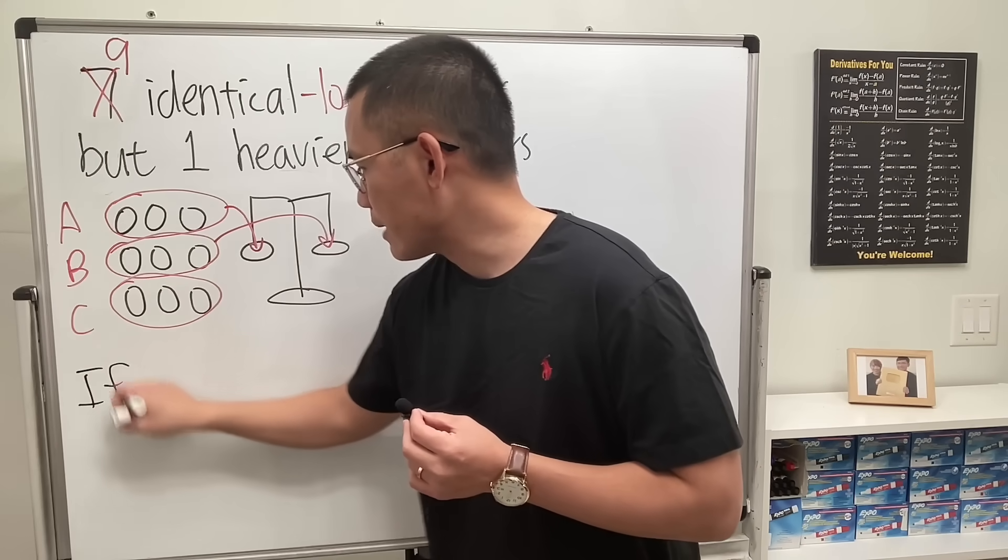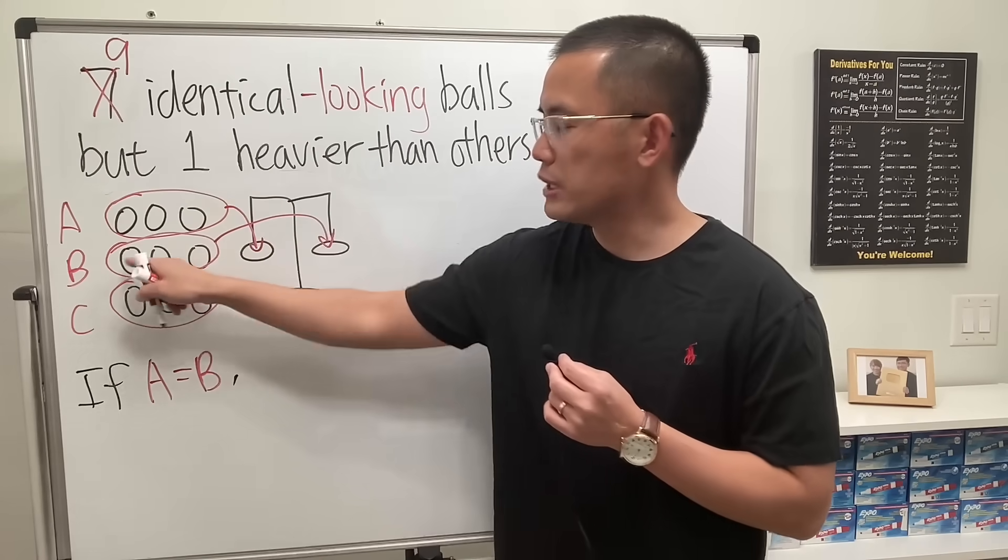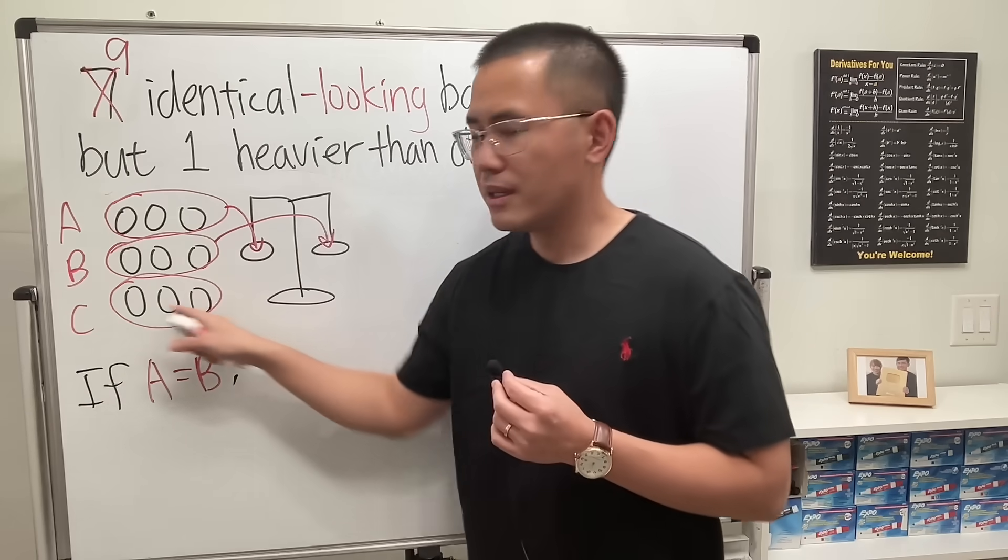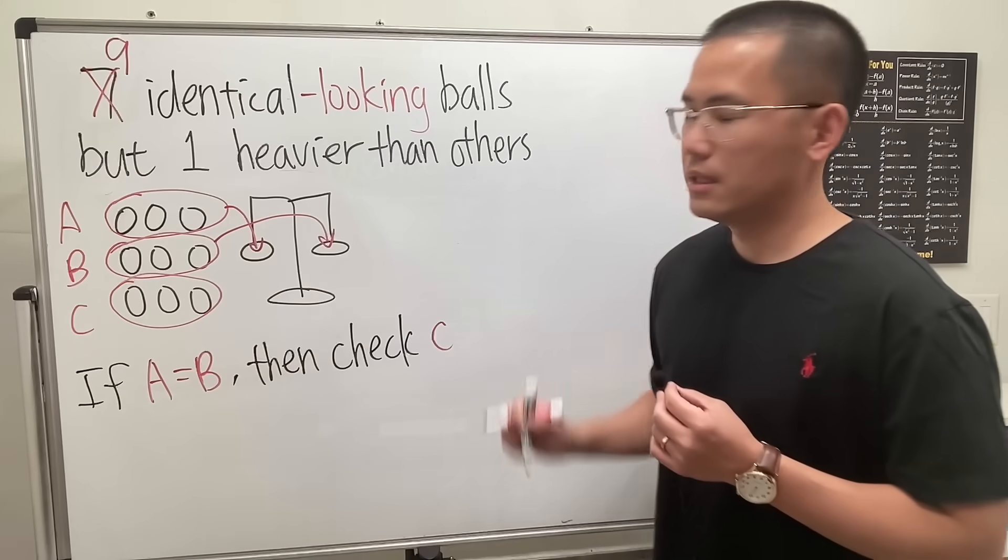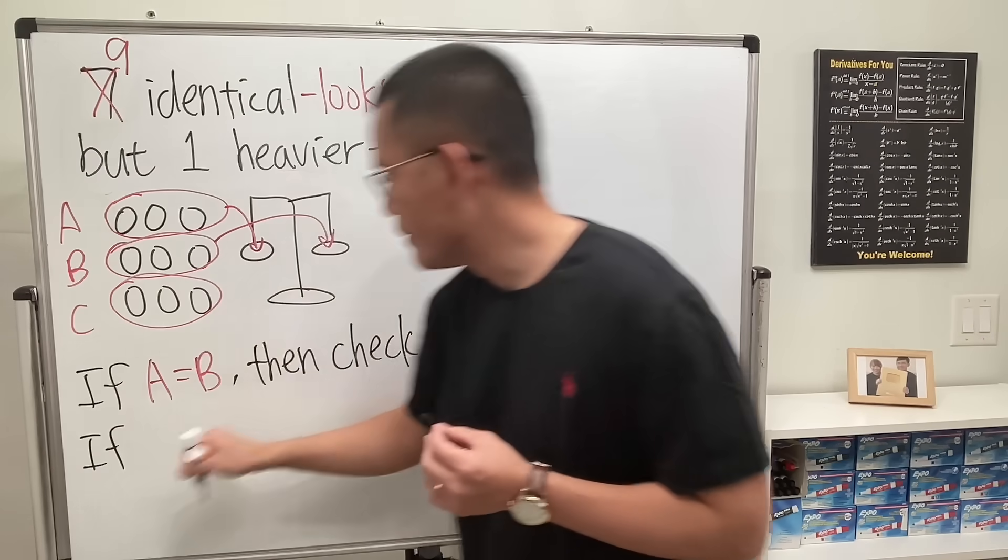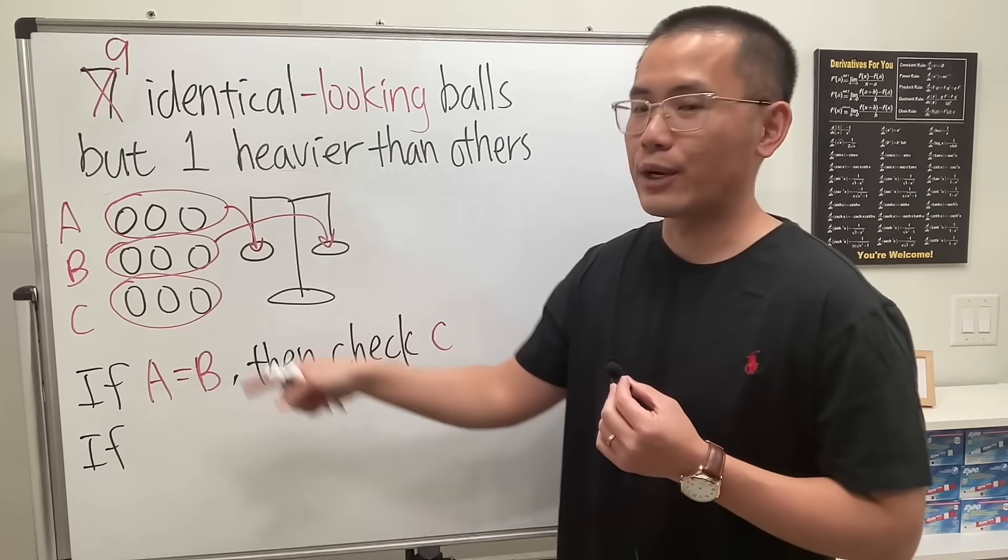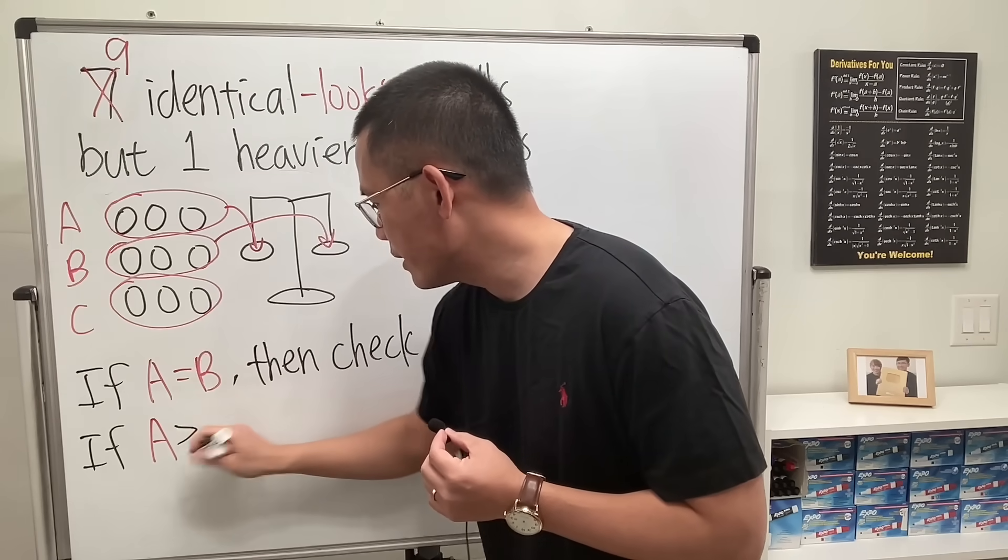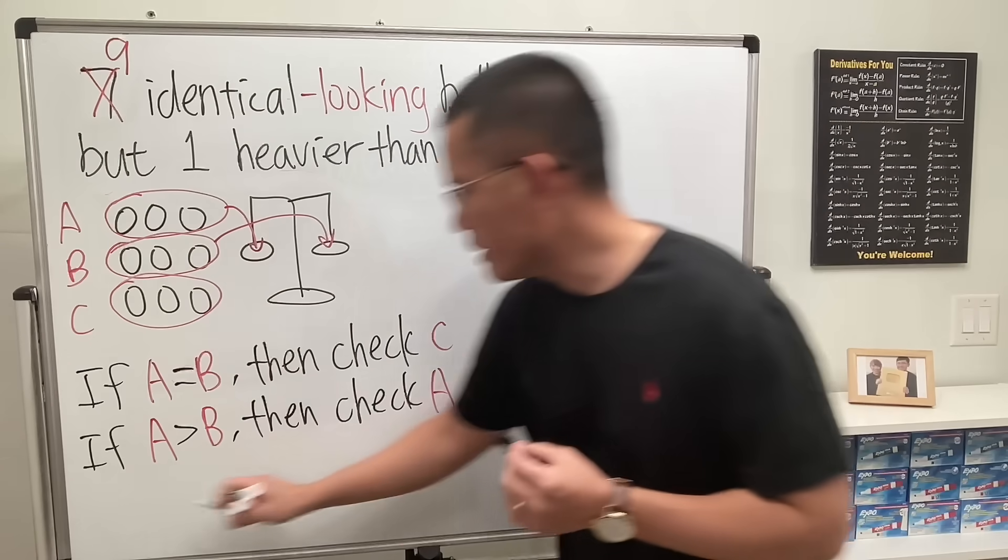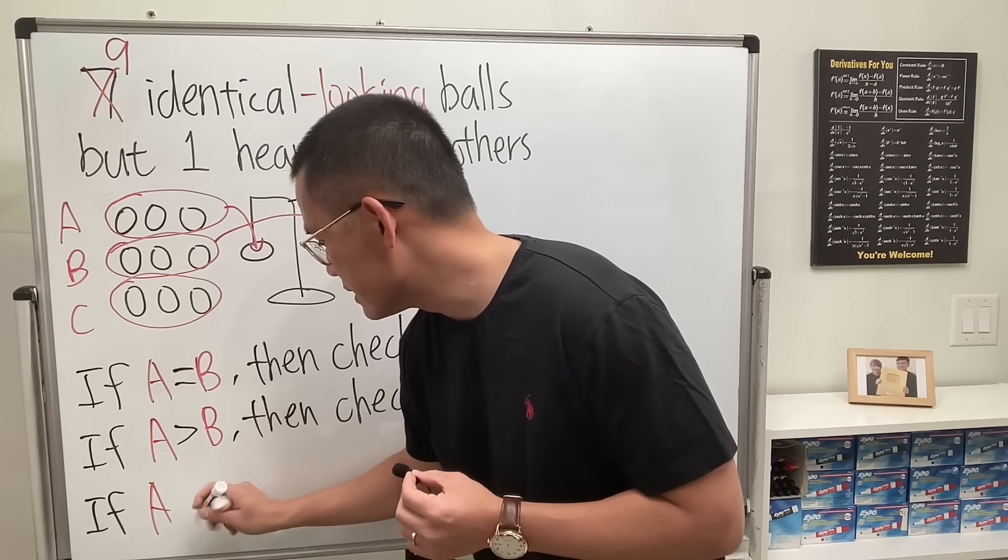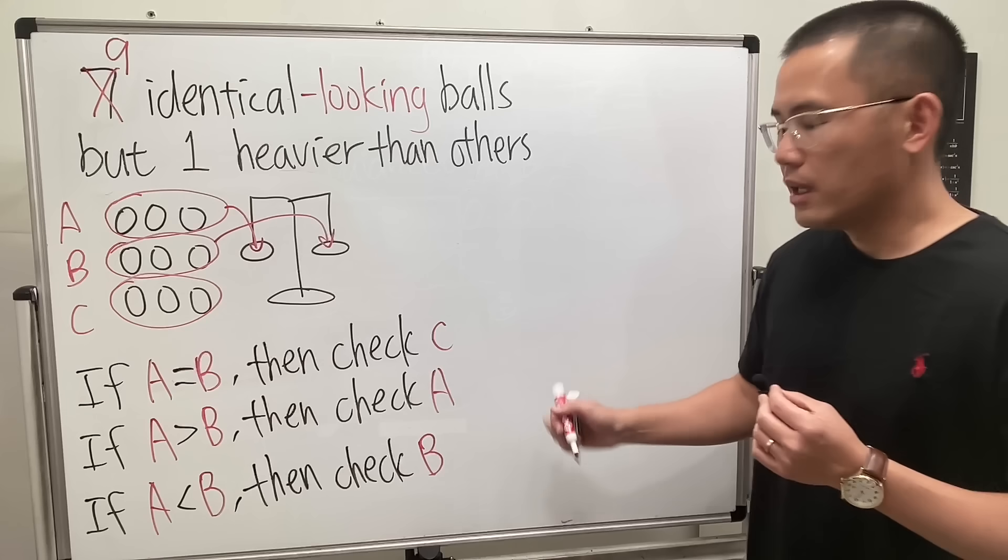What's going to happen? Well, if A equals B, that means all these balls and all these balls have the same weight, so the heavier ball must be in group C and we check C. If whichever group has a heavier side, we just check that group. If A is greater than B, we check A. Similarly, if A is less than B, we check B. Whichever way, we're going to narrow it down to just three balls after the first usage of the scale.